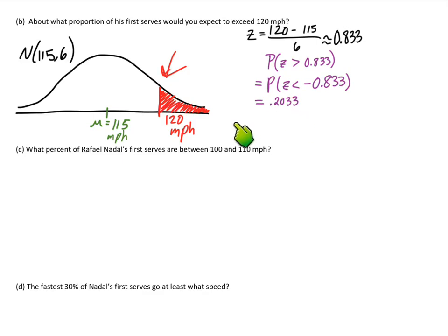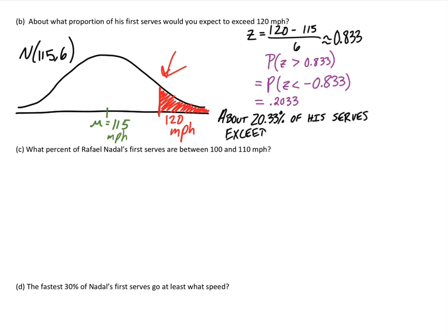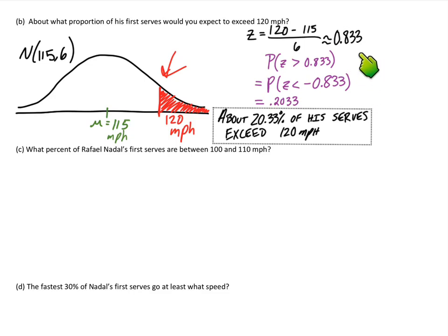That makes sense — the other way was about 79.9 percent. So in context, this 20 percent shaded area means that about 20.33 percent of Rafael Nadal's serves would exceed 120 miles per hour. That's a really nice characteristic of the normal distribution: if you want to know the area above a certain boundary, look up the area below the opposite of that boundary.